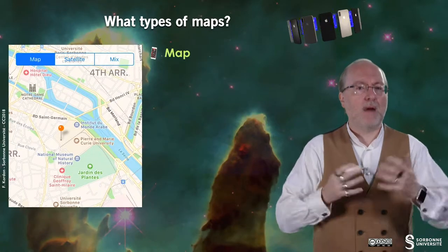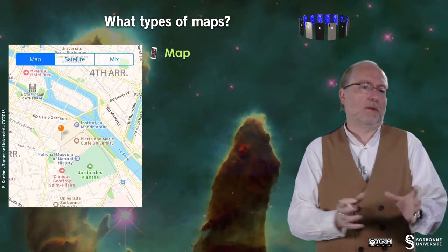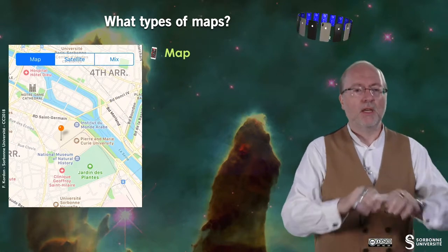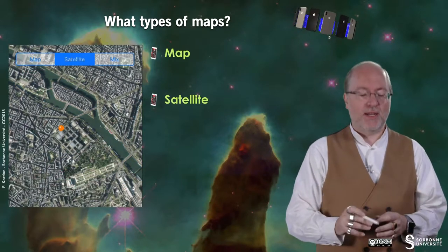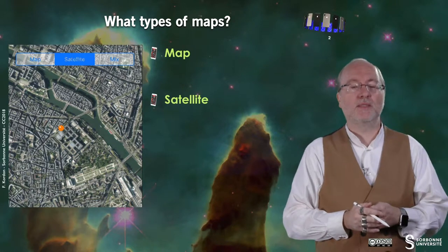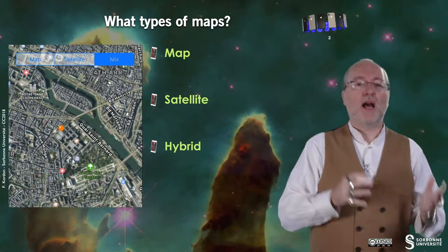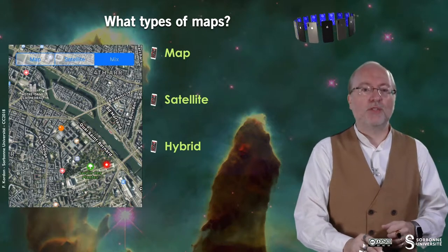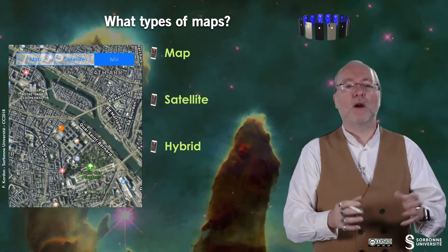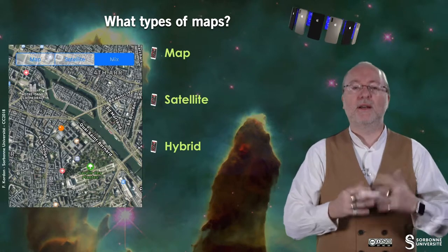So what are the types of maps you can manipulate? The first type is the standard map — typically just a drone view. Then you have a satellite map, which is a picture from a satellite, so it's an overview from the sky. And finally you have hybrid, which means you have the satellite view combined with some textual information that shows you where you are or gives you information about the location, of course if this information is available.